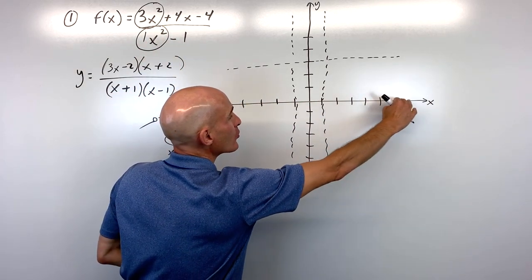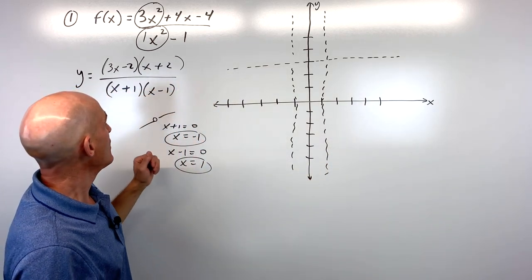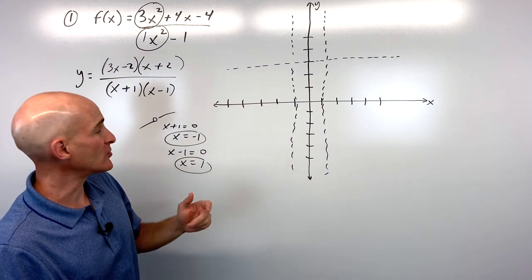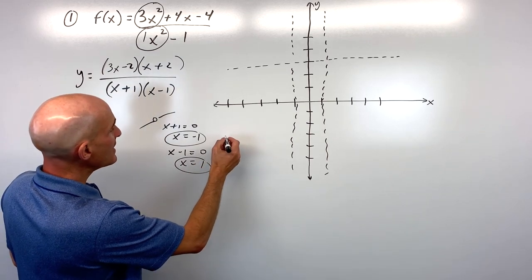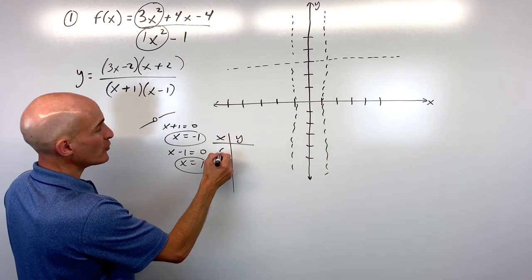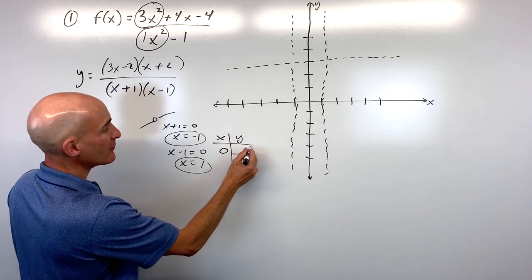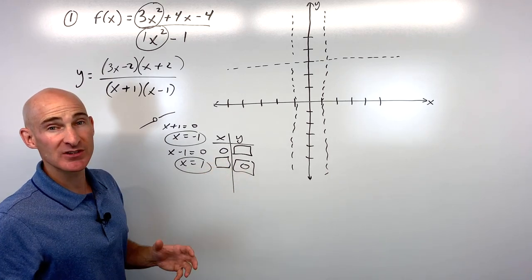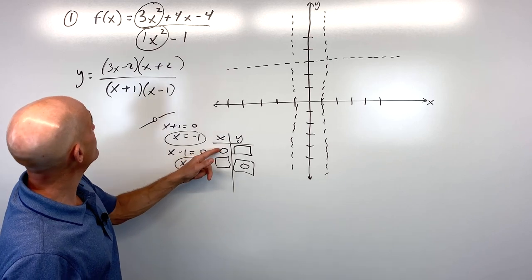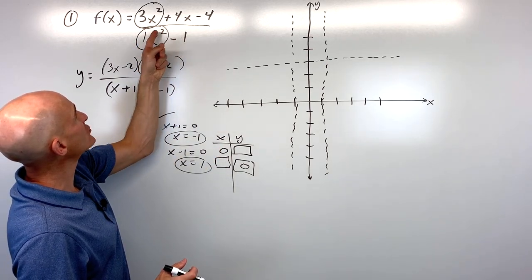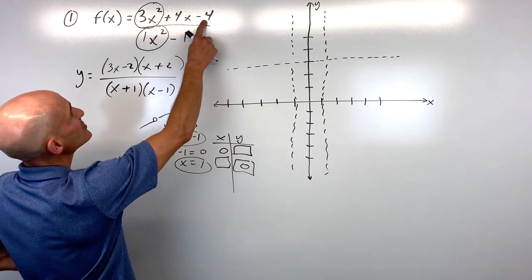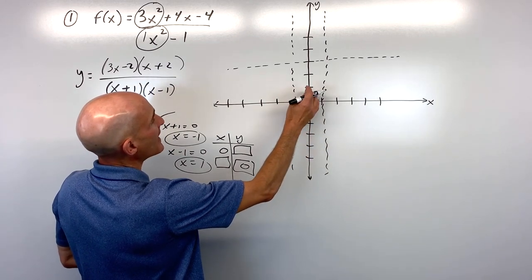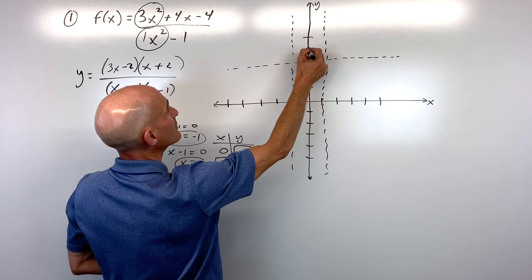Let's sketch in that horizontal asymptote at y=3. Now we want to find where it crosses the x-axis and y-axis. Putting 0 in for x, all terms with x cancel, and we get -4/-1 = positive 4. So the graph crosses the y-axis at y=4.